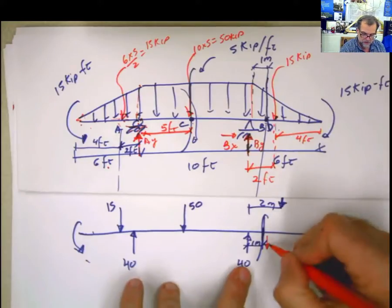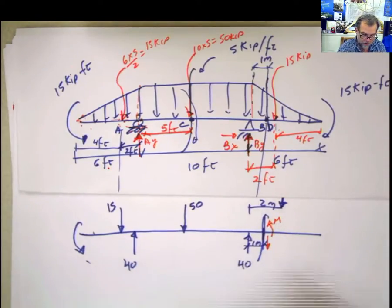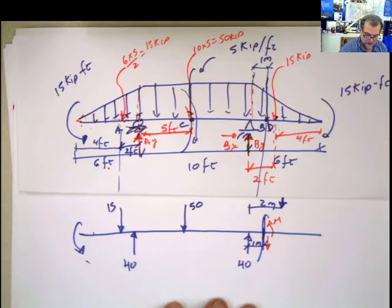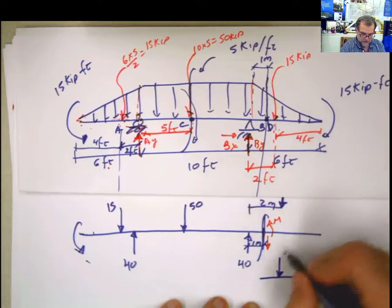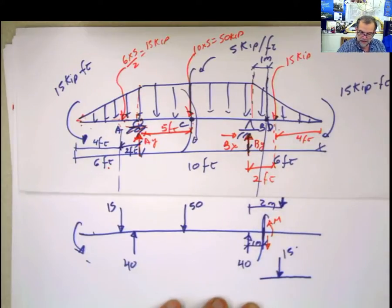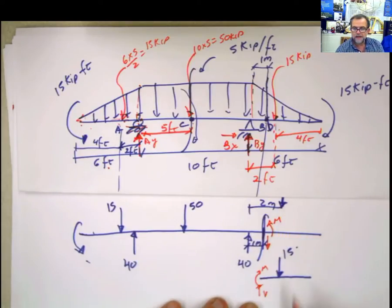And then I do this for my shear and this for my moment. And if I select the other side, which is this part, then in the other side I put the total force here of 15 kips. And then I put my shear and my moment. Well, guess what? This is wrong.